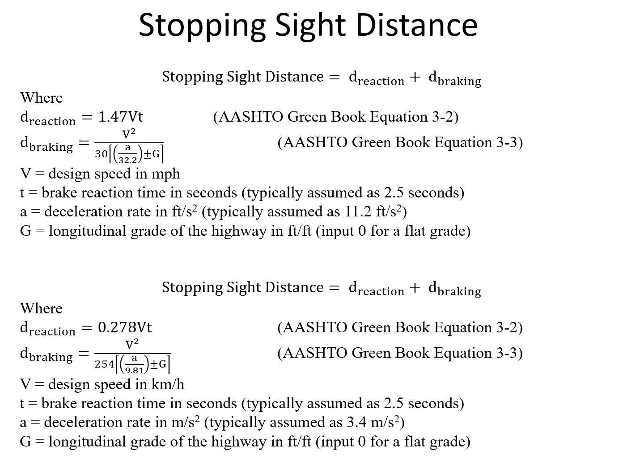Next our braking distance, the equation is V squared, so our design speed squared, divided by 30 times the deceleration rate in feet per second squared, divided by 32.2 plus or minus the grade if there's some grade on the roadway. The assumed deceleration rate is 11.2 feet per second squared. And grades, you can input zero if it's a flat grade or positive or negative if there's an upgrade or a downgrade.